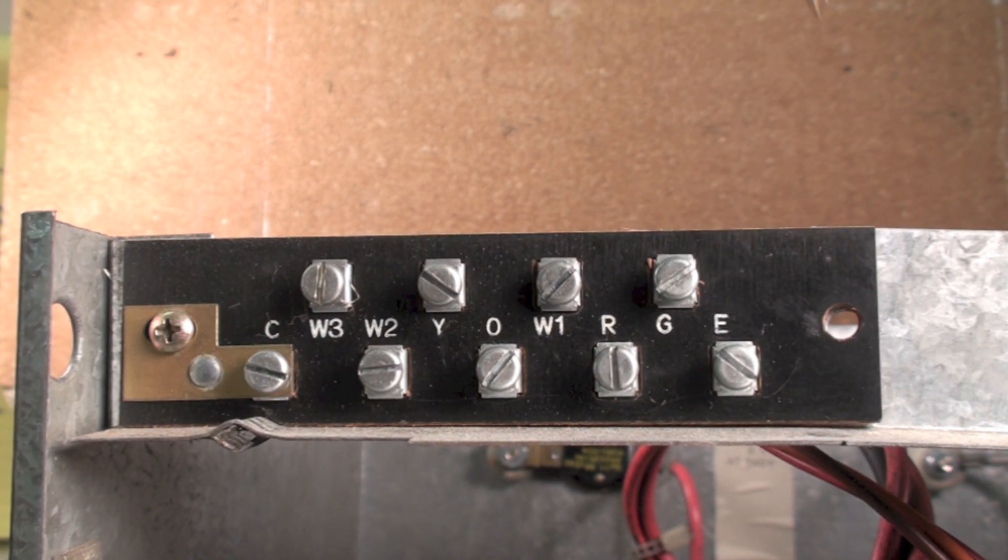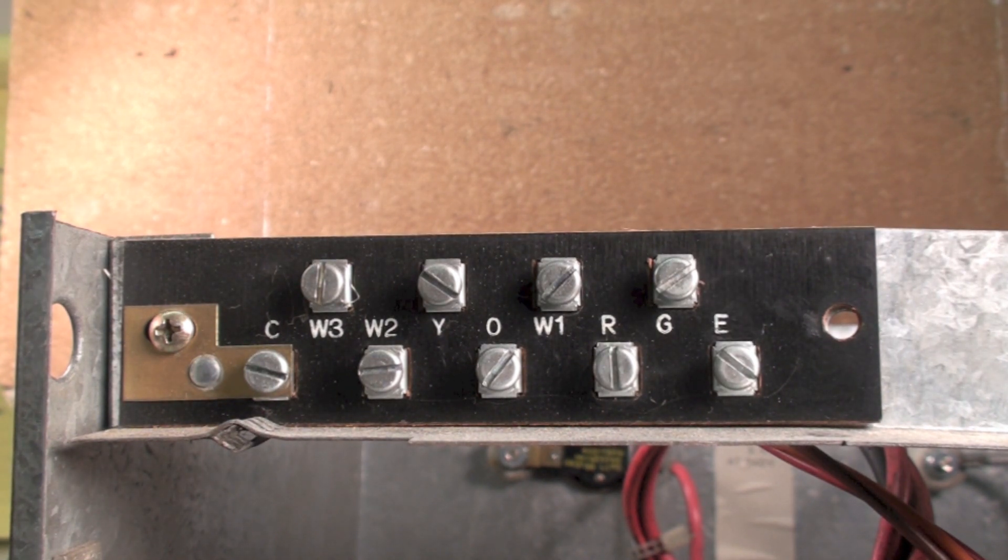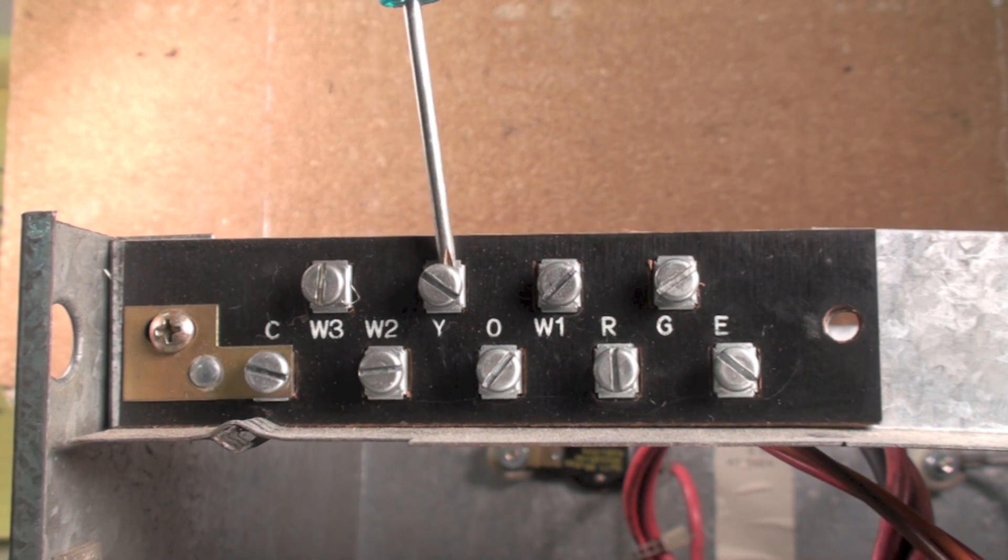E is for emergency heat. Usually what happens is if E gets power, it locks out the outdoor unit. In other words, it drops Y out, doesn't go to Y.